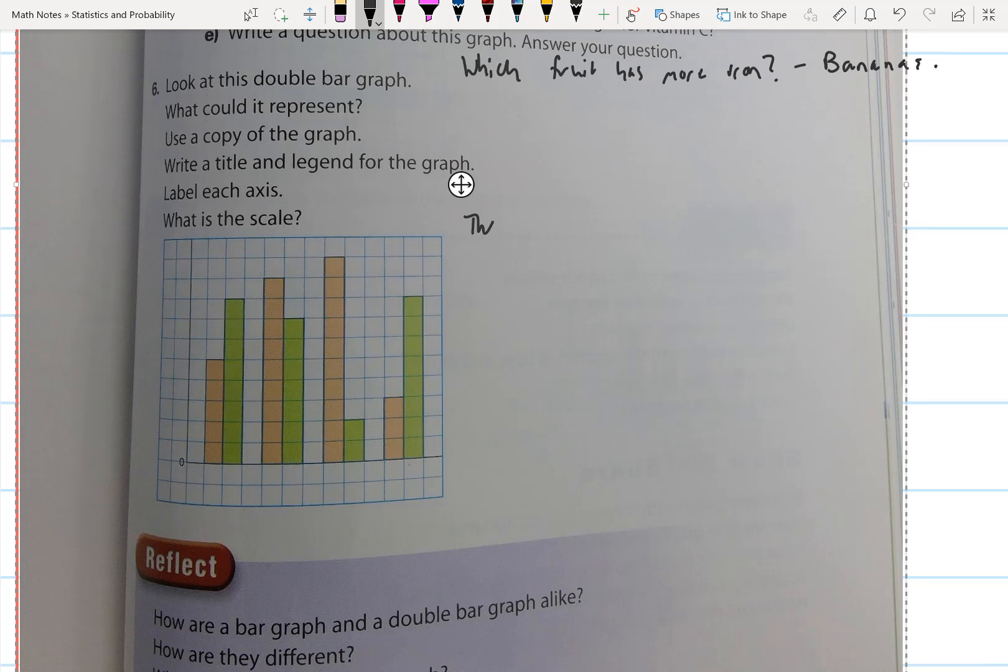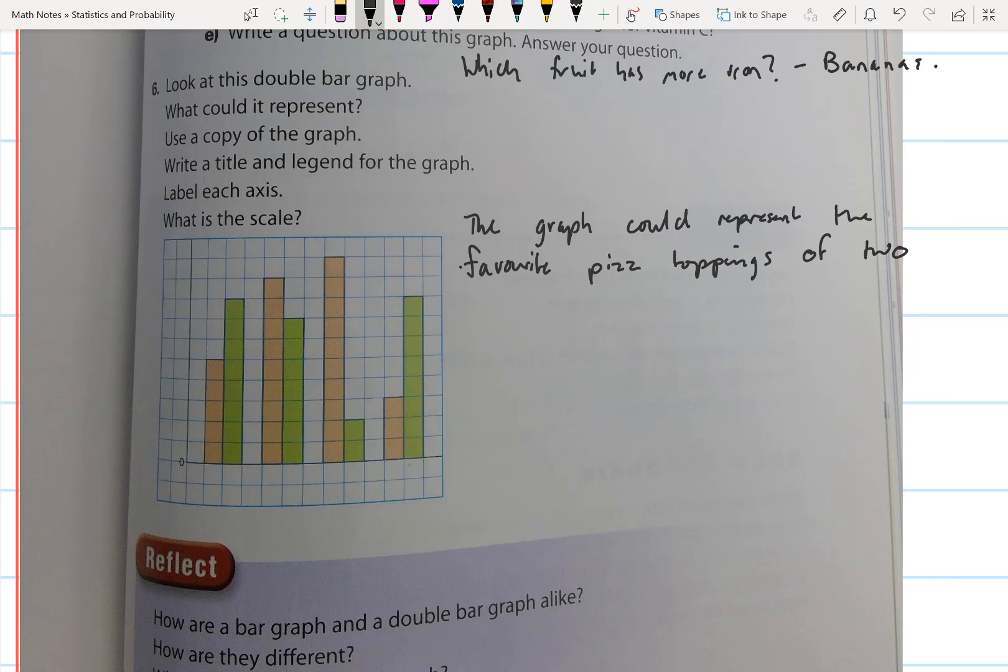The graph could represent the favorite pizza toppings of two grade 5 classes. So it's a double bar graph. You're making a comparison between two subcategories, and for this it's two different grade 5 classes. A title could be Favorite Pizza Toppings for Grade 5.